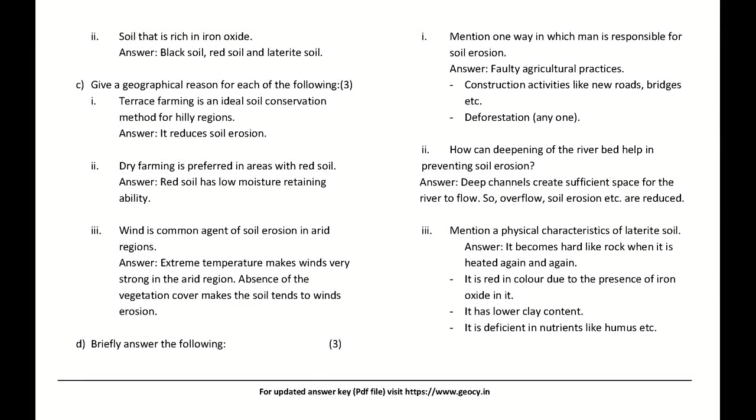Give geographical reasons: Terrace farming is an ideal soil conservation method for hilly regions — it reduces soil erosion. Dry farming is preferred in areas with red soil — red soil has low moisture retaining ability. Wind is a common agent of soil erosion in arid regions — extreme temperature makes winds very strong, and absence of vegetation cover makes the soil susceptible to wind erosion.